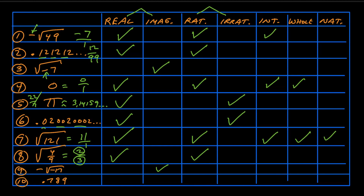For number ten, the decimal 0.789 — you can see that it terminates, it stops. There's no dot, dot, dot and no line over any of the numbers to show that it repeats. This is a terminating decimal, which means it can be written as a fraction: 789 over 1000, making it a rational number. It's not the square root of a negative number, which means it's real. But it's not an integer, not a whole number, and not a natural number. Just two categories: real and rational.